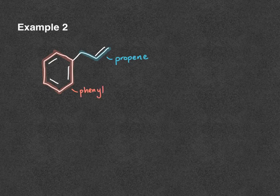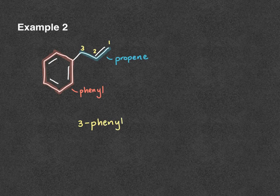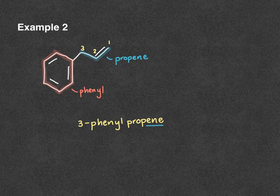As we learned in alkane naming, the double bond gets the priority. So we're going to name this from right to left so that our double bond has the lowest possible number. We list everything in alphabetical order — in this case we just have the one group. So the name will be 3-phenyl-1-propene. You don't need to put any sort of number for the one since it's implied, but you could write 3-phenyl-1-propene for consistency in your naming practice.